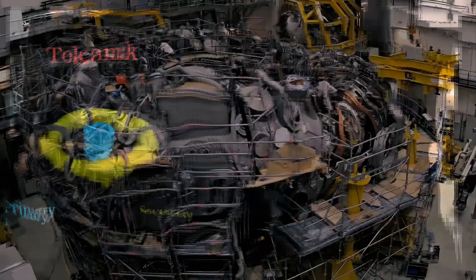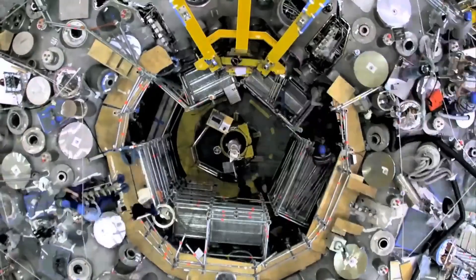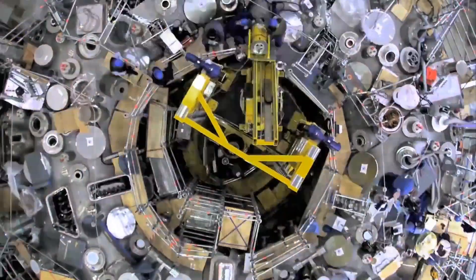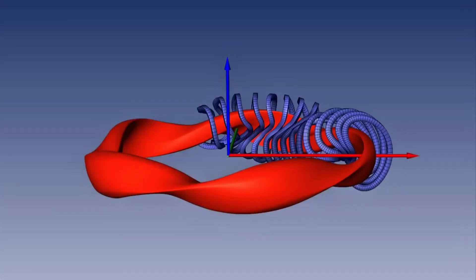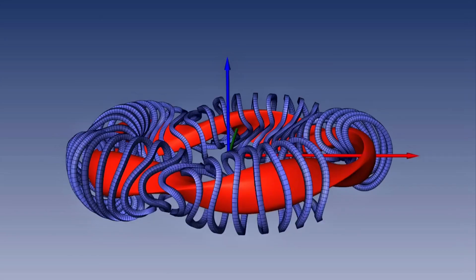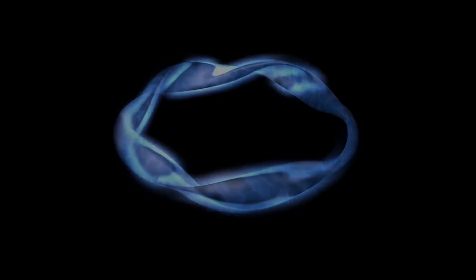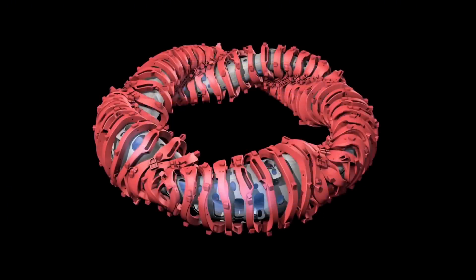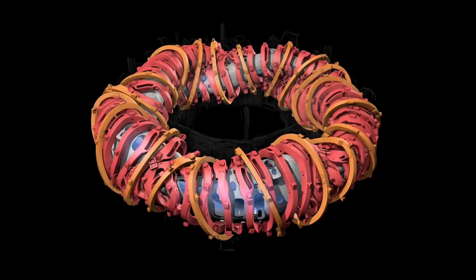For decades, the dominant approach to fusion has been the tokamak, a toroidal, donut-shaped, magnetic confinement device. In a tokamak, powerful magnetic coils create a cage-like field, and an electric current is driven through the plasma like a transformer to help confine and heat it.